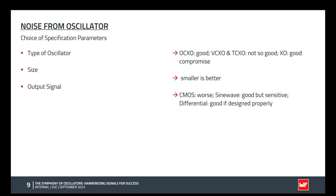A sine wave output is the best for EMC because it's a single clear frequency, but it is very sensitive to outside interferences, so you must take great care with it. A differential output like LVPECL or LVDS is usually very good if designed properly — both differential lines must be the same length and close to each other for good EMC performance.